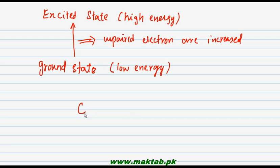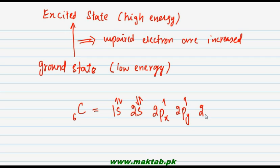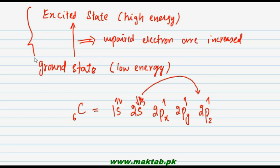Hybridization की example carbon के case में study करेंगे। Carbon (atomic number 6) की electronic configuration है: 1s², 2s², 2px¹, 2py¹, 2pz⁰. Ground state से excited state में जाने का मतलब है कि 2s orbital का एक electron उठके 2pz में चला जाएगा — ground state से electron उठा और excited state में आया क्योंकि 2pz की energy ज़्यादा है। यह process इस तरह होती है।